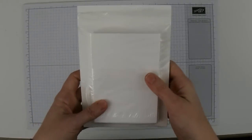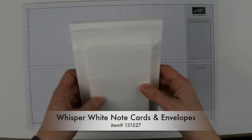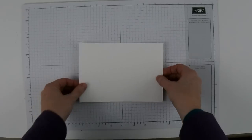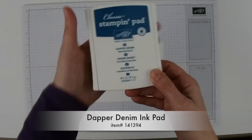To start off with you're going to need a pack of Whisper White note cards and envelopes. I'm just going to pop out a note card here and put this down on my grid paper. We're going to start with the Dapper Denim ink pad.